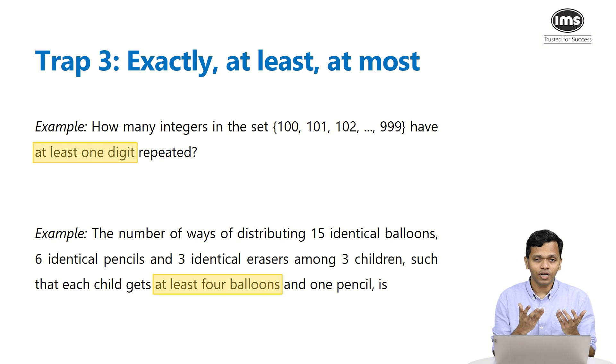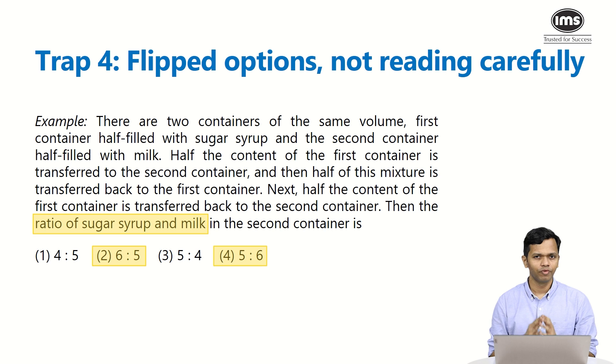Let's talk about the second example: the number of ways of distributing 15 identical balloons, six identical pencils, and three identical erasers among three children such that each child gets at least four balloons. If you don't read it carefully, if you don't read the at least part of it, you will think that it's four balloons that is getting distributed. Again, the word identical is also very important in this particular question. So when they say at least four balloons, it will decide how many cases you will have to write. So that is why these words such as exactly, at least, at most, they have a lot of impact on the interpretation of the question.